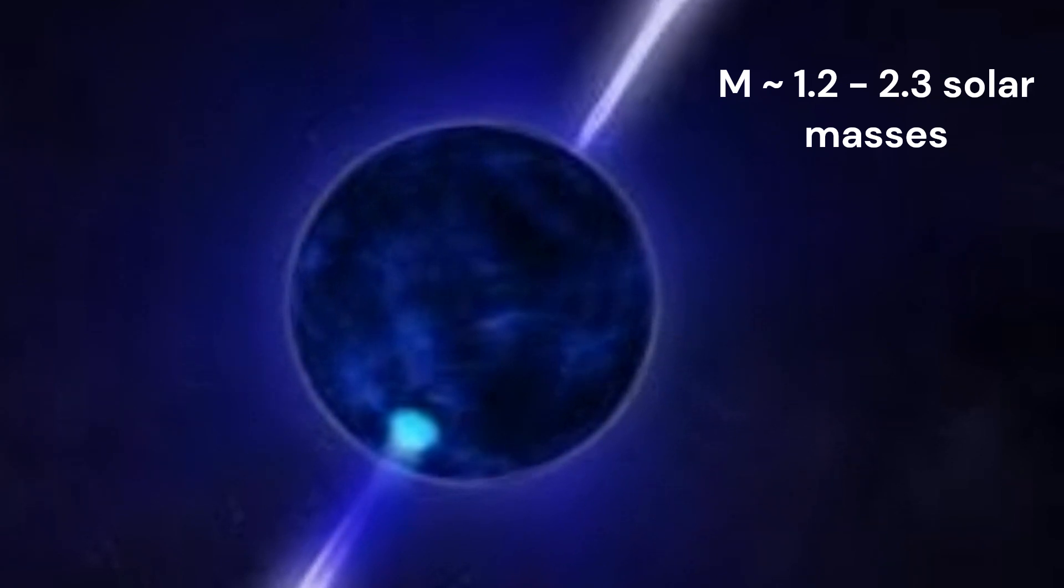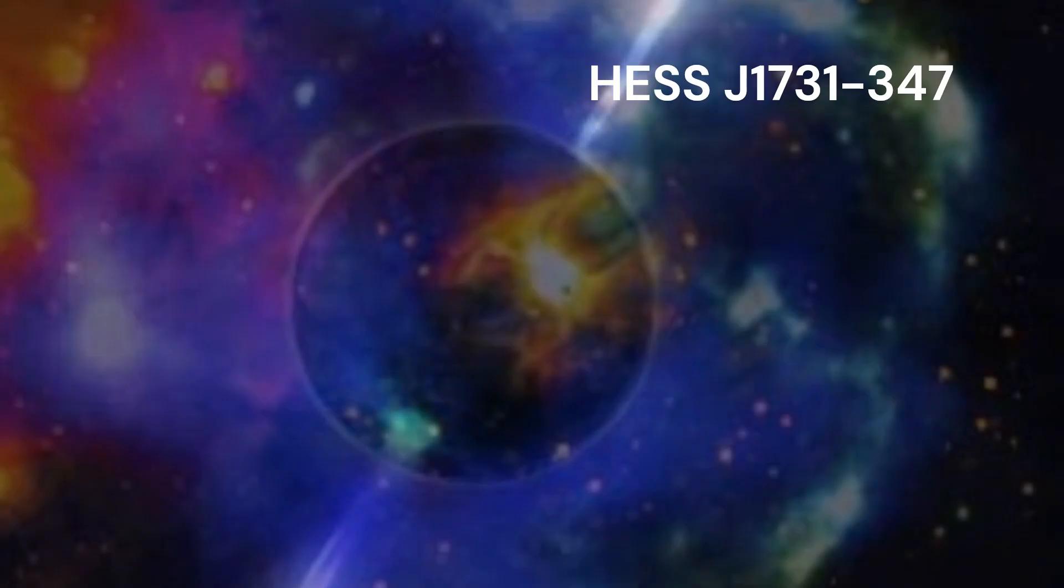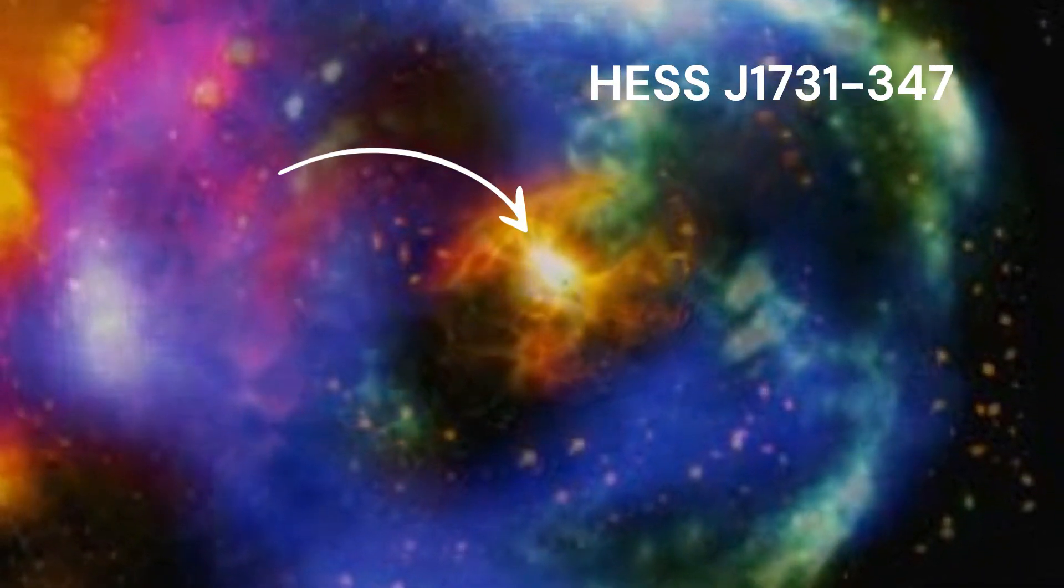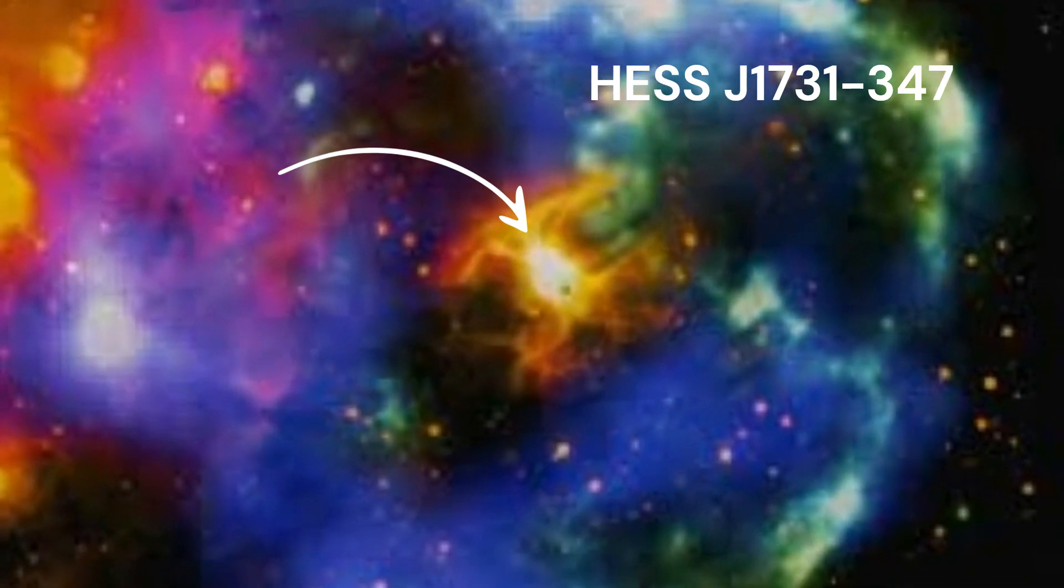Scientists reported the discovery of a neutron star with a mass considerably below the predicted lower limit in a recent study that was published in Nature Astronomy. HESS J1731-347 is the name of the supernova remnant in which this peculiar neutron star resides.